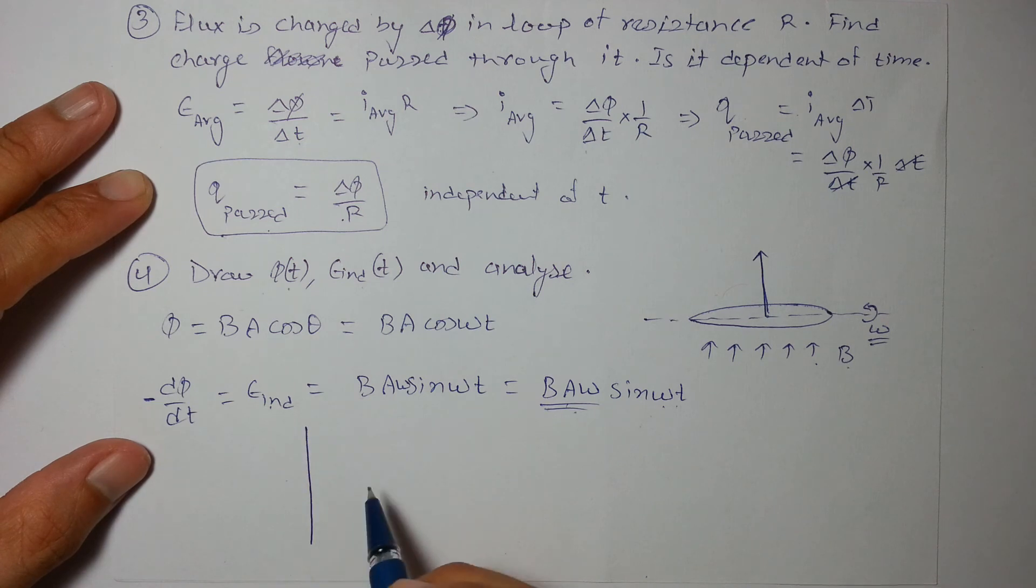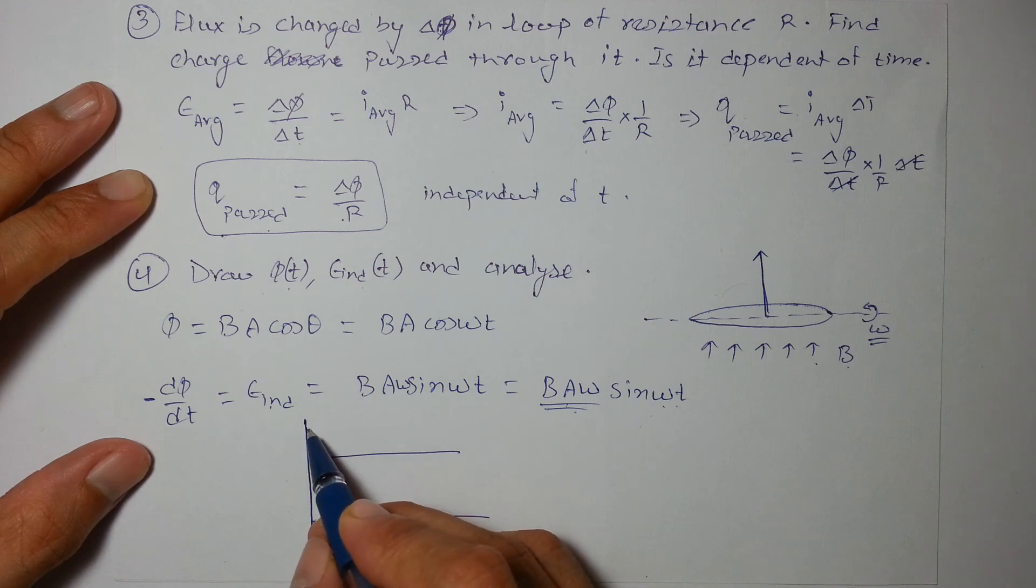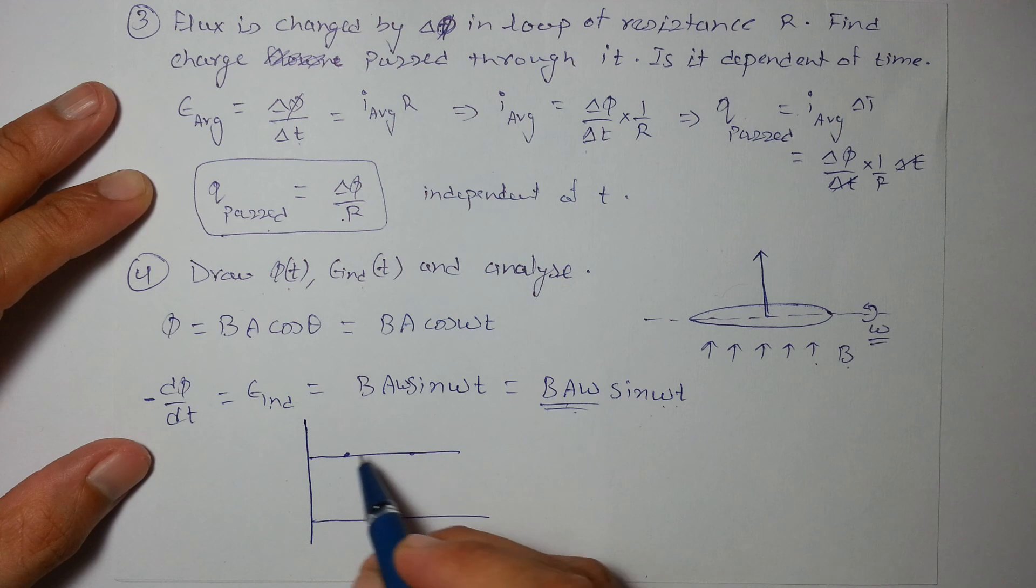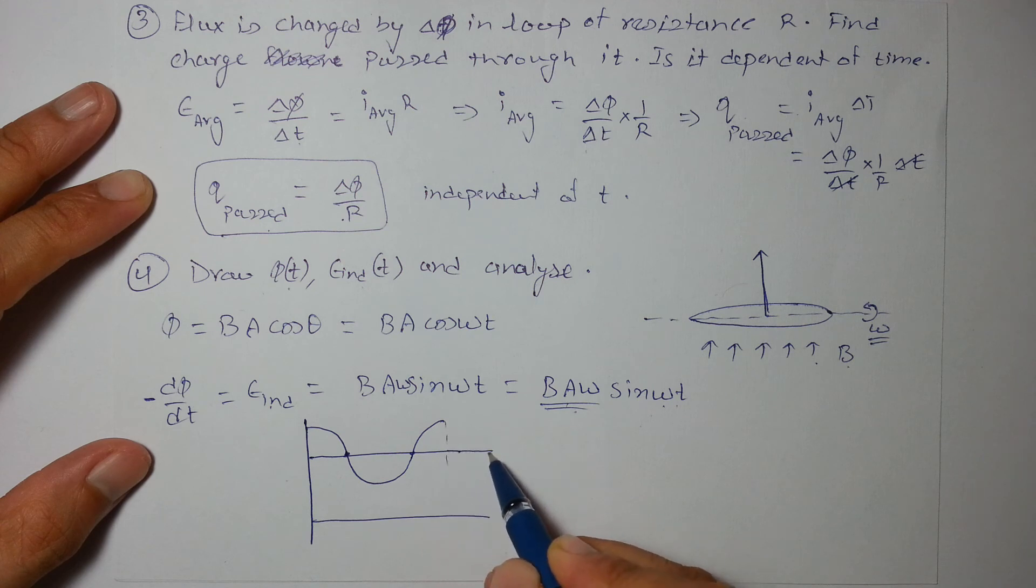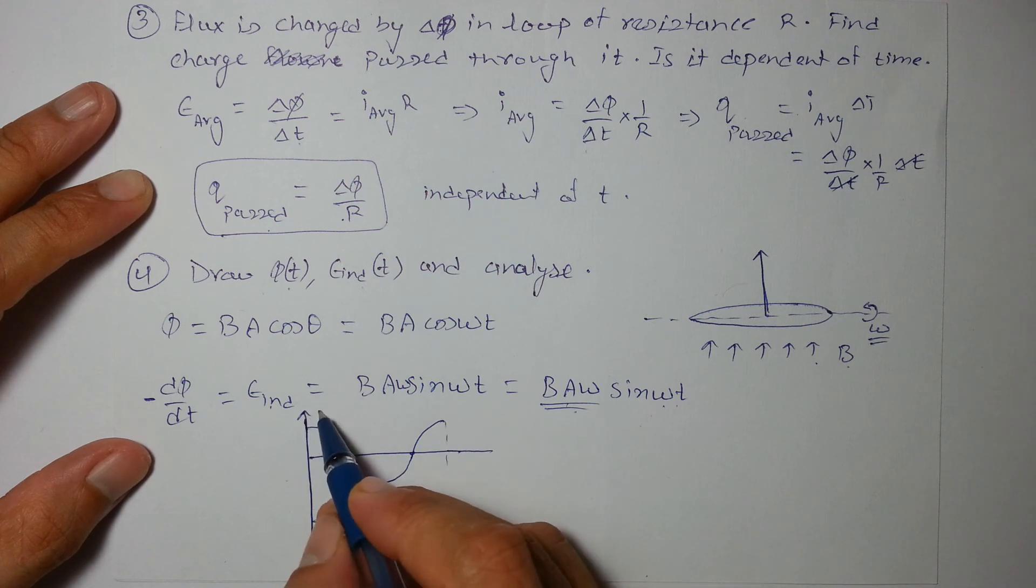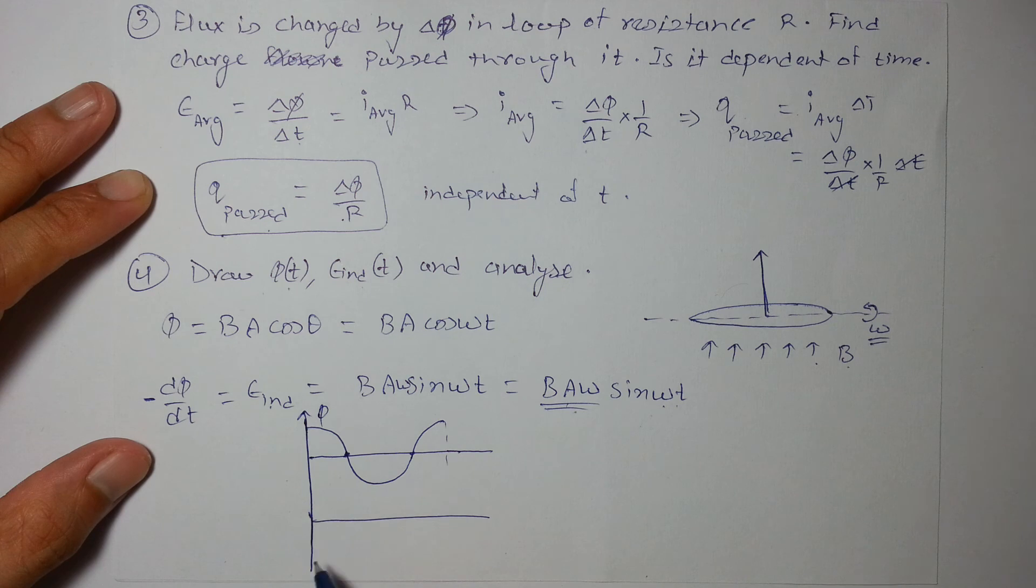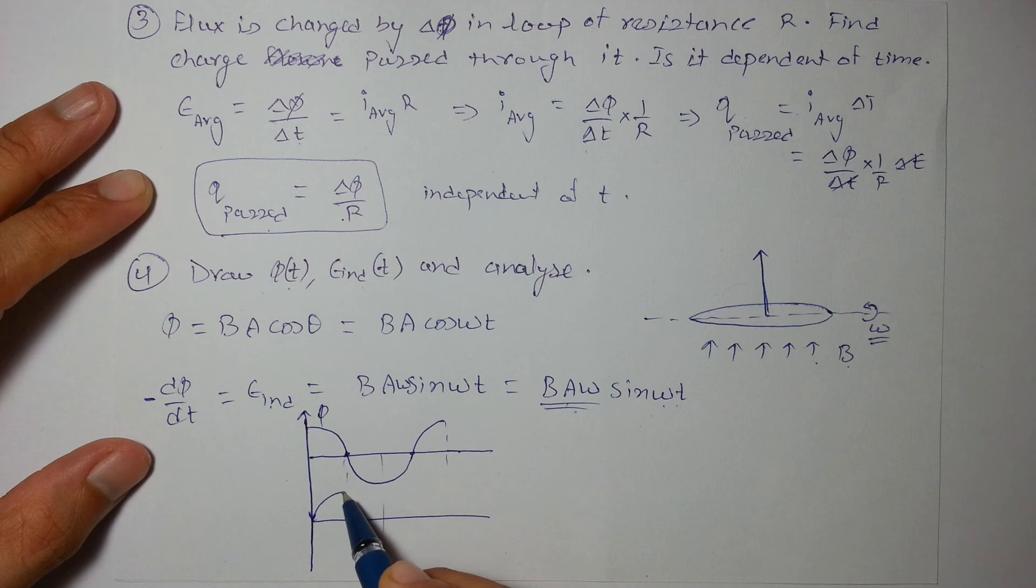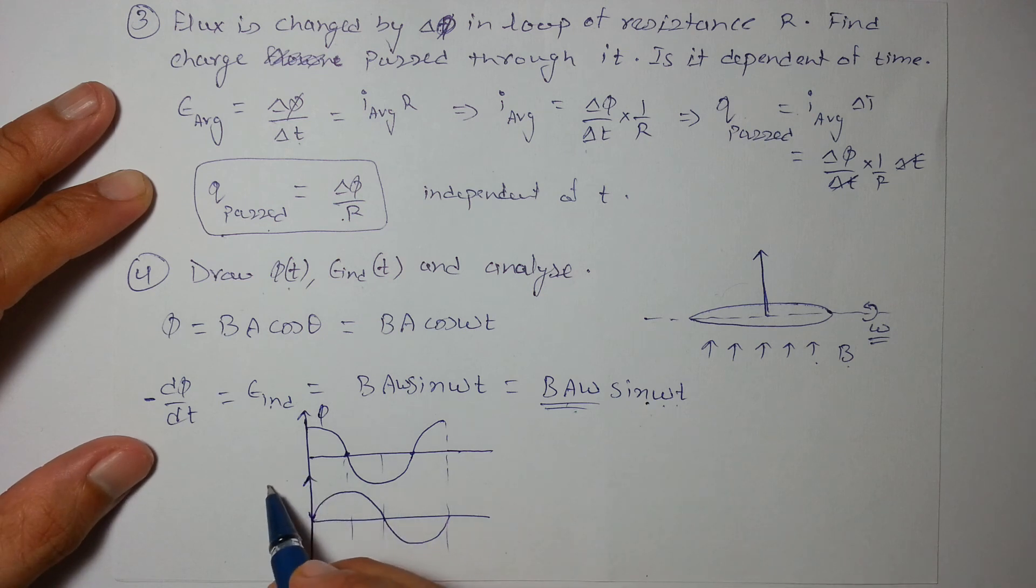So if we'll draw sin and cos graphs on similar scales, this will be graph of flux as a cos graph and let's draw a sin graph. This will be graph of sin because EMF induced is a sin function.